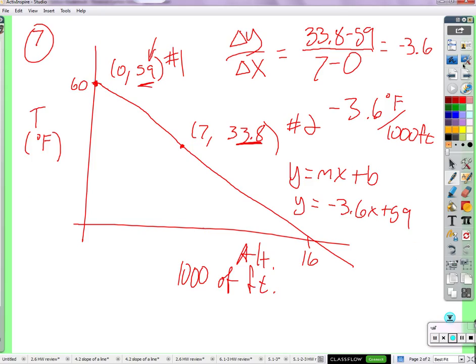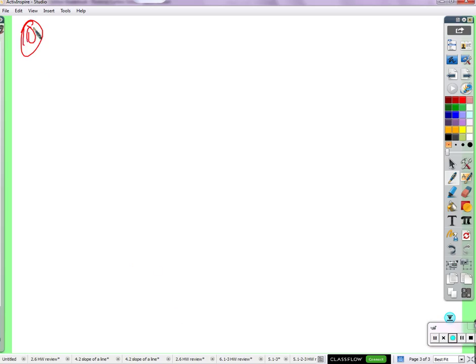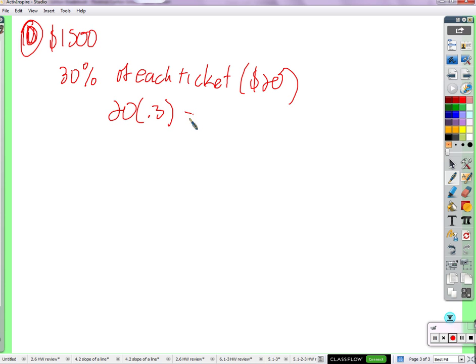Now number 10. We've got some band giving a concert here. They charge $1,500. Whoever is asking them to come play at the venue is going to have to pay $1,500. Plus they're going to have to pay them 30% of each $20 ticket sold. So each ticket costs $20. They get 30% of every ticket. How much is that? How much is 30% of a $20 ticket? $6. How did you find that? 20 times 0.3. Perfect. You got $6. So every time a ticket is sold, the band gets $6.